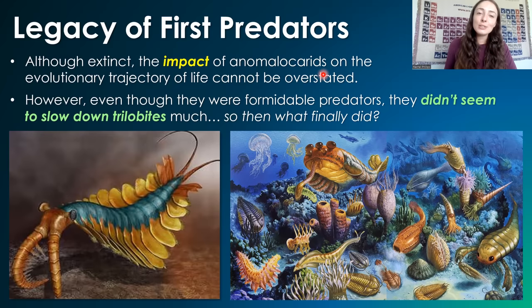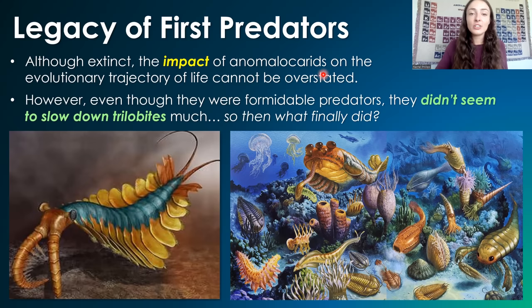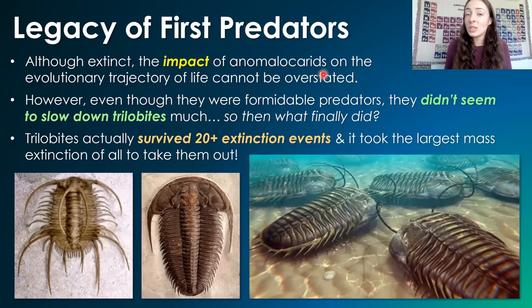But they didn't seem to slow down trilobites much — there was not a lot that could slow down trilobite radiation and diversification throughout the Paleozoic. Trilobites actually survived 20-plus mass extinction events over the near 300 million years that they lived, and it wasn't until the largest mass extinction in Earth's history that they finally went extinct. If you want to hear about how trilobites managed to survive so many extinction events, check out the next video linked above. References are linked in the description below.